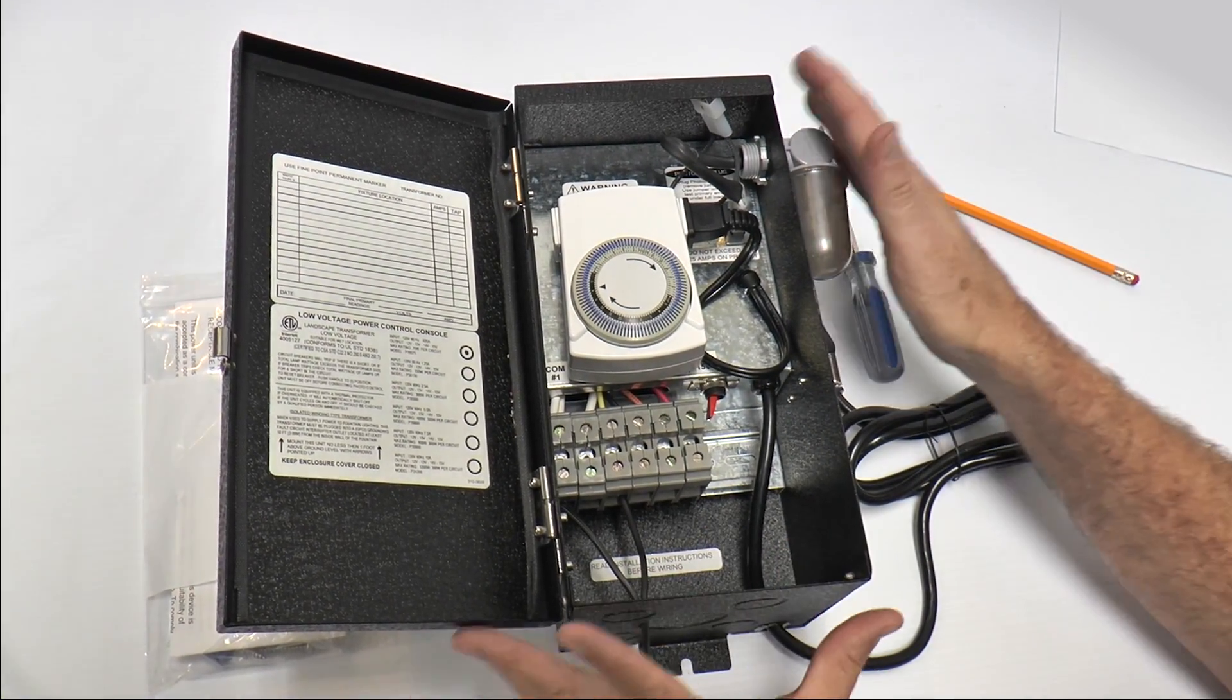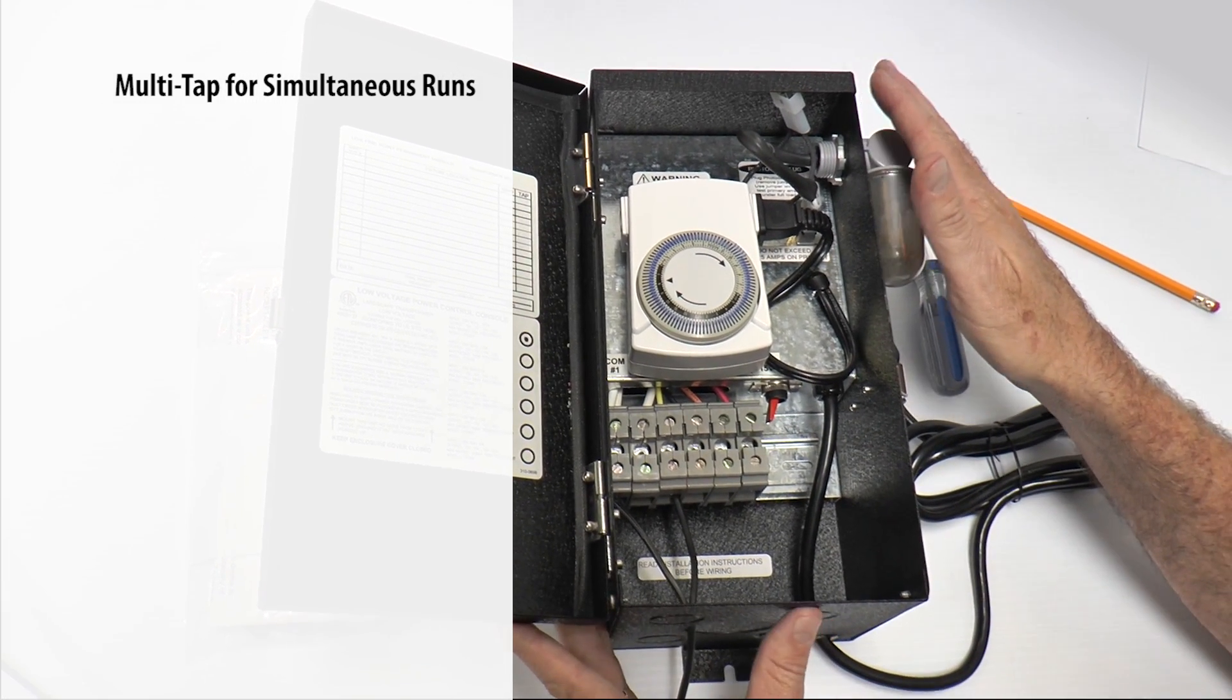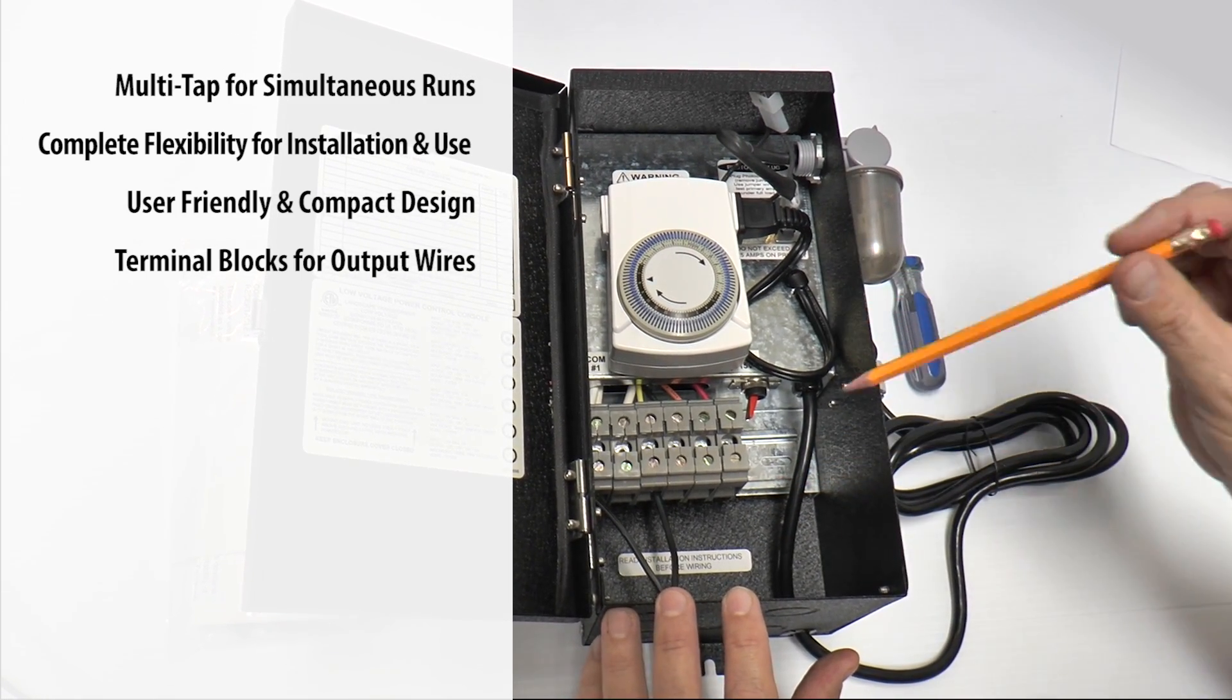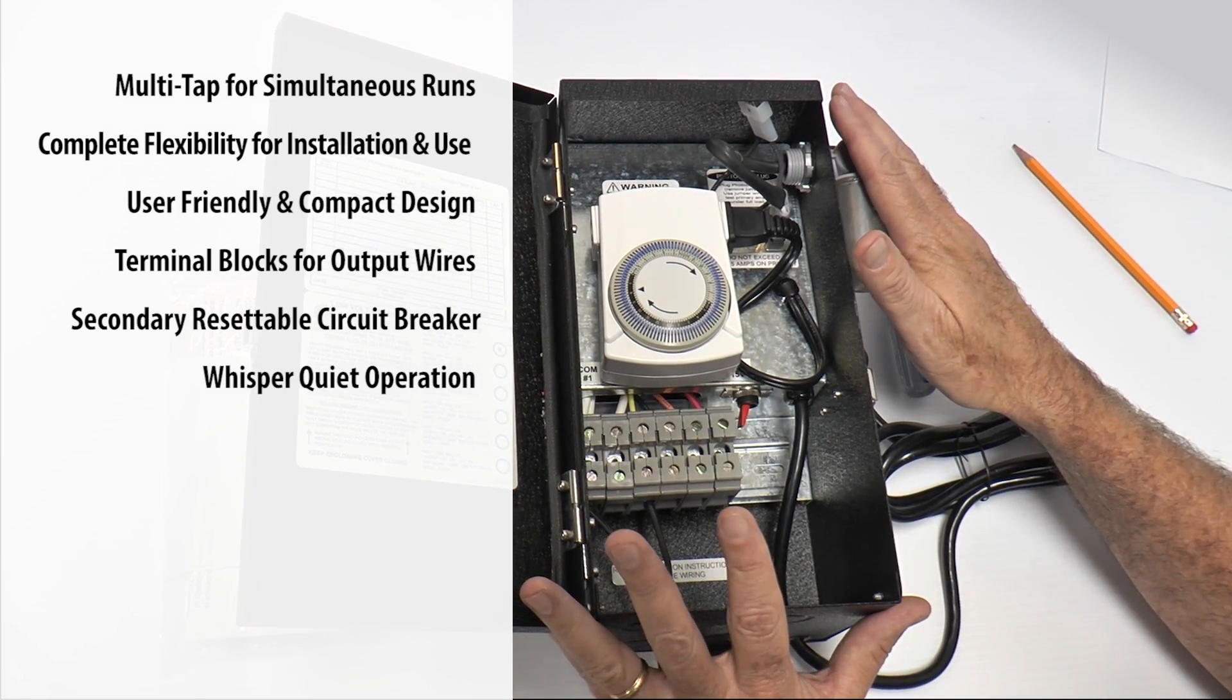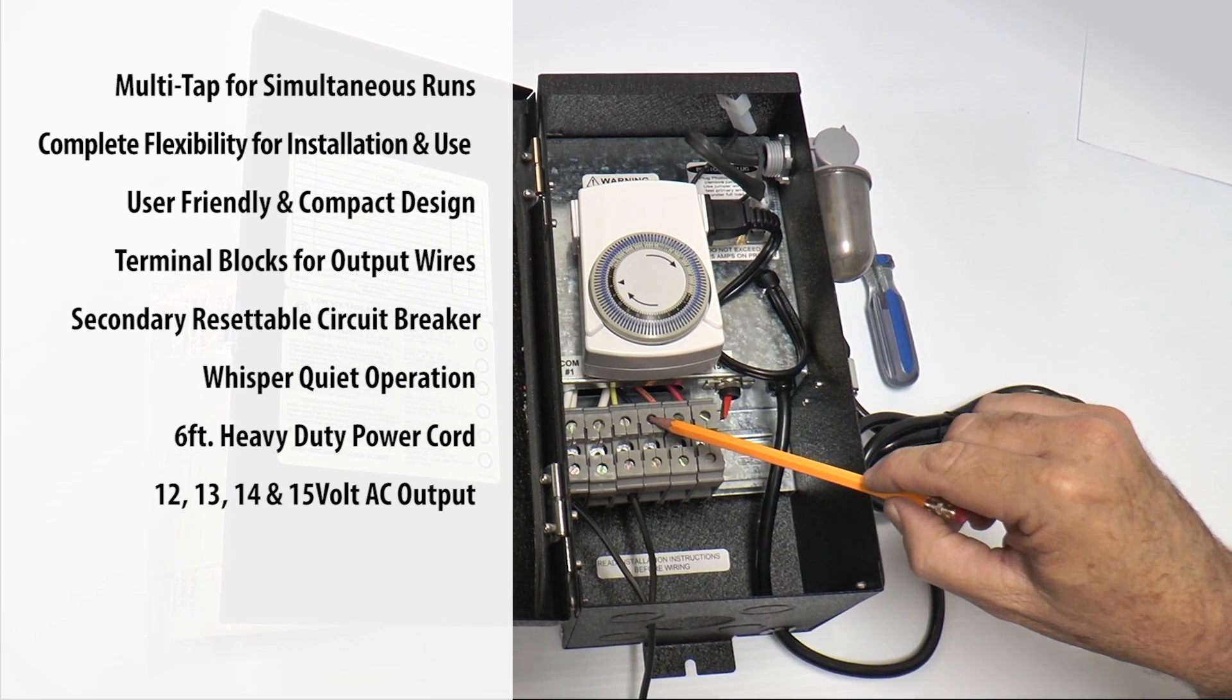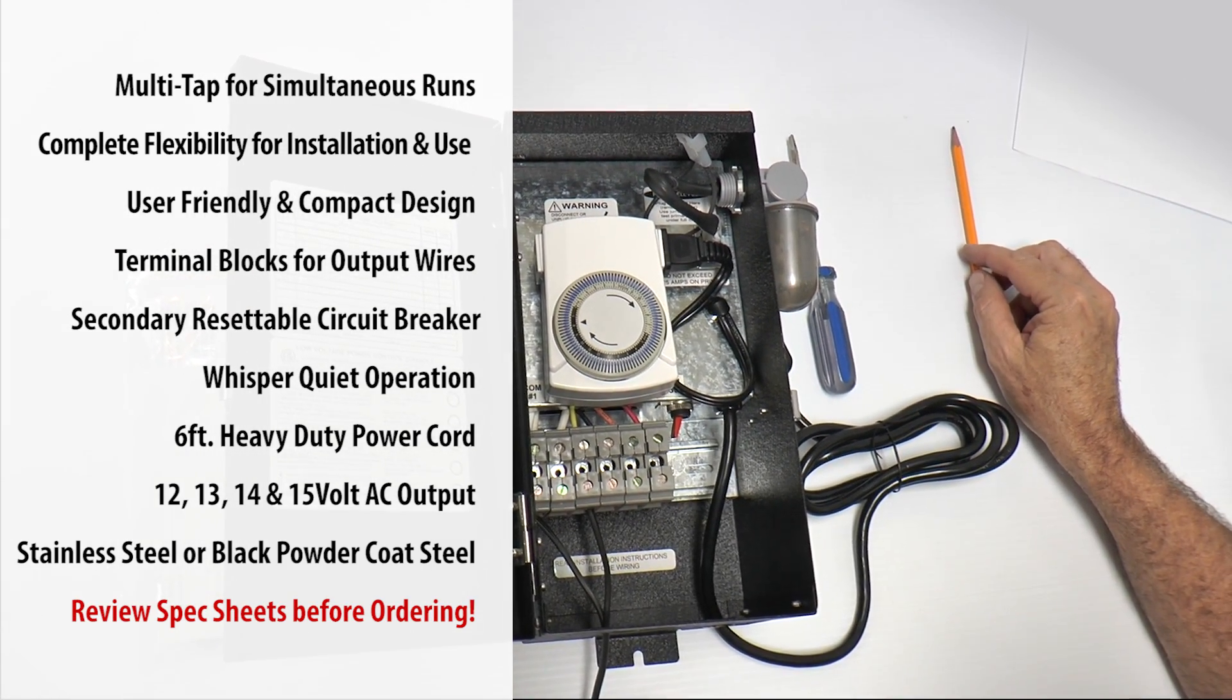In summary, the multi-tap design allows for laying simultaneous runs for landscape lights according to your specifications and design layout. This transformer allows for complete flexibility in installation and use. The transformer is user-friendly with a compact design, terminal blocks for the output wires, your secondary resettable magnetic circuit breaker. Also, it's whisper quiet operation, six foot heavy duty power cord, and the unit has a 12, 13, 14, and 15 volt AC output. Rugged either stainless steel housing or the black powder coated as we show here. And we ask that you review our specification PDFs on our website before you order.